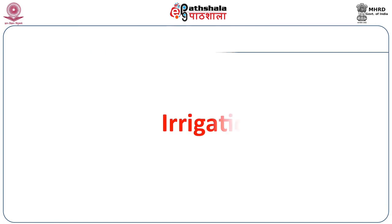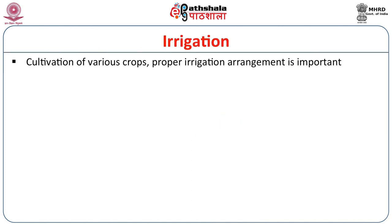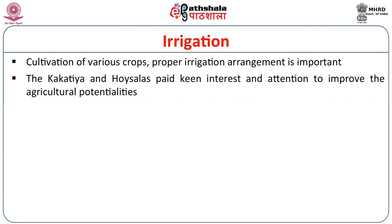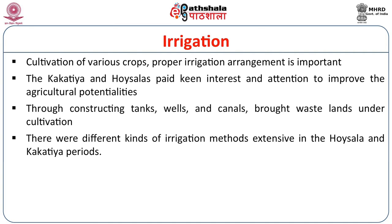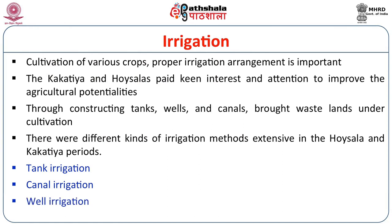We will now discuss the irrigation system of the Hoysala period, Yadavas period, and the Kakatiya period. For the cultivation of various crops, proper irrigation arrangement is very important. The Kakatiyas and Hoysalas paid much interest and attention to improve agricultural potentiality. Through constructing tanks, wells, and canals, they brought many wastelands under cultivation. There were different kinds of irrigation methods found extensively during the Hoysala and Kakatiya period. Tank irrigation was familiar in both dynasties. Canal irrigation was also very popular. Well irrigation was also used for irrigating cultivable lands.